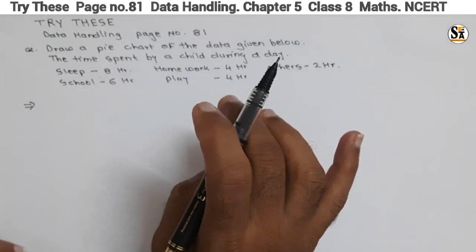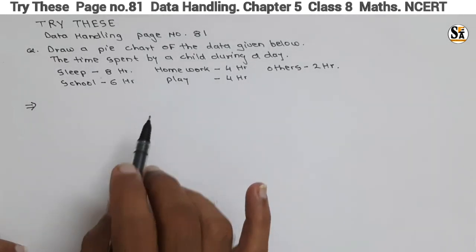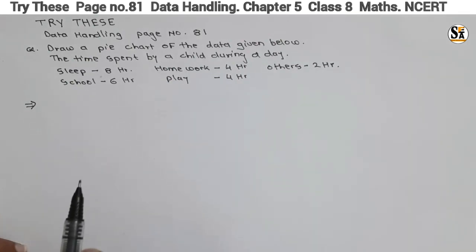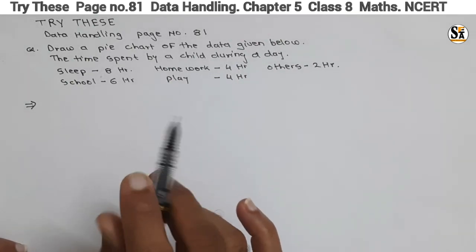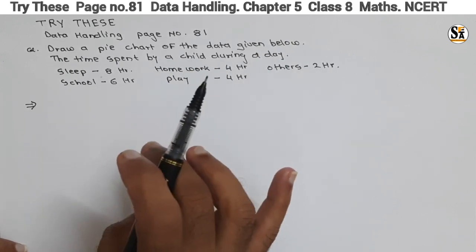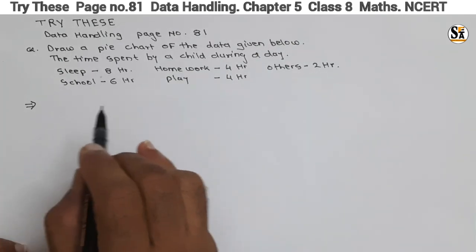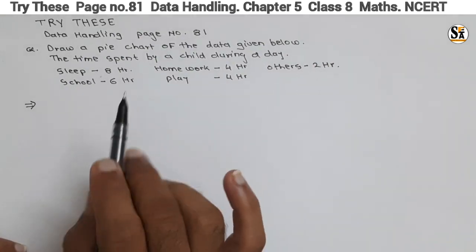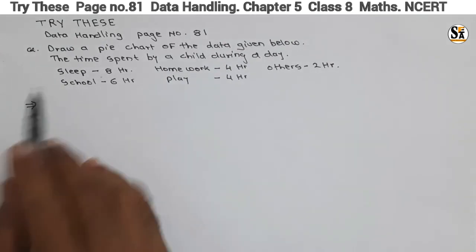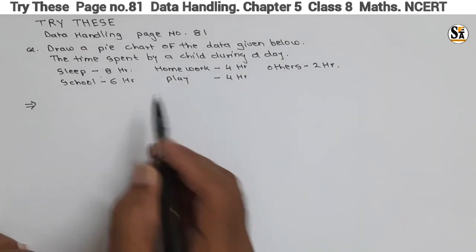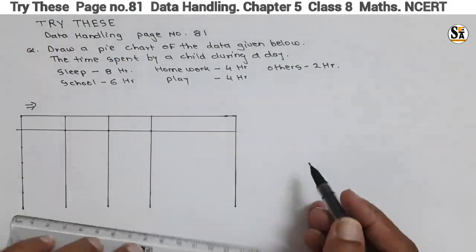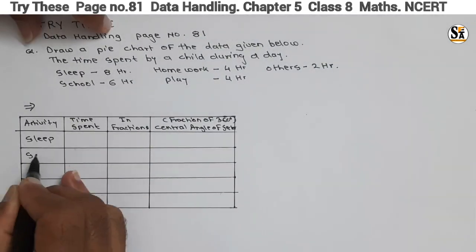In a pie chart, a circle is divided into sectors, and the size of each sector is proportional to the activity or information it represents. The activities given here are sleep, school, homework, and play. The whole circle represents 24 hours, and that 24 hours is divided into five sectors. Each sector represents the corresponding information. So let's start to draw the pie chart — first, draw a table.